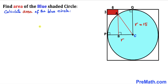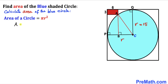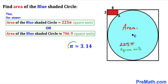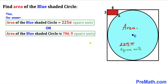For our final step, let's calculate the area of the blue circle using the formula πr², where r = 15. Area = π × 15² = 225π square units. Since π ≈ 3.14, the area of the blue shaded circle is approximately 706.9 square units. Thanks for watching, and please don't forget to subscribe to my channel for more exciting videos.